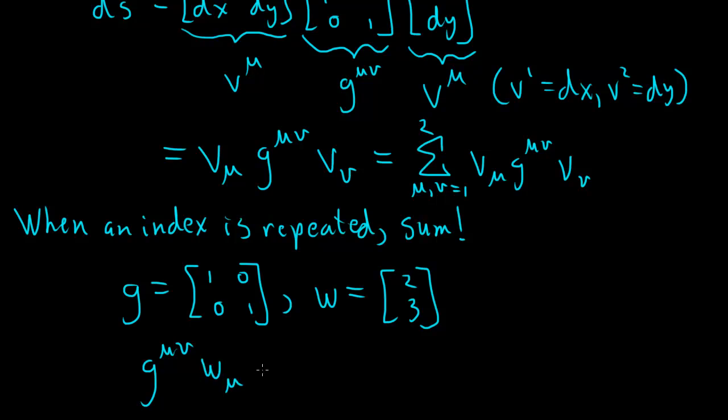G mu nu, W mu. So that means that we're going to repeat all of these mu indices and sum over them. So that means G1 nu, W1, plus G2 nu, W2.